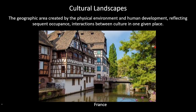Let's look at an example. Here we have a cultural landscape of France. This photo was taken in France and it shows various elements of French culture. It shows the physical environment — there is a river, a body of water, and there are trees, probably native to Europe. We also see French architecture. There are some signs here that probably have French language, showing the linguistic characteristics of the cultural landscape.